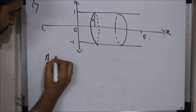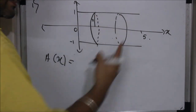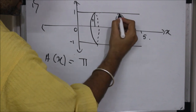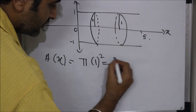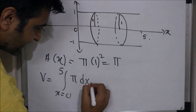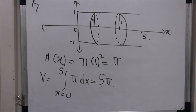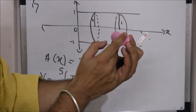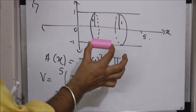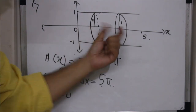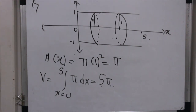To find the volume of this cylinder, I first find the area of the cross section. The cross sections are circles with area πr². The radius is 1 everywhere, so the area is π. Integrating from 0 to 5 gives the volume: ∫₀⁵ π dx = 5π. You can verify this with the cylinder formula πr²h = π(1²)(5) = 5π.